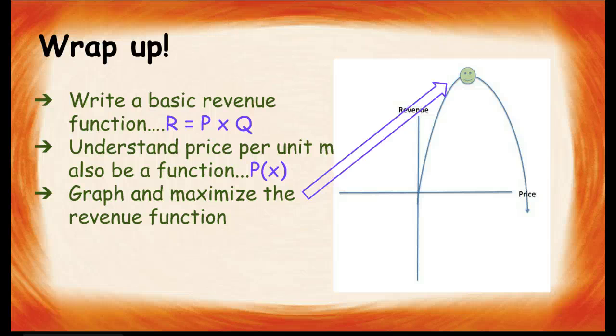Now, you can write a basic revenue function, price times quantity, but you also understand that the price per unit may also be a function, and it could be p of x. And then, finally, you can graph and maximize the revenue function by finding this vertex point.